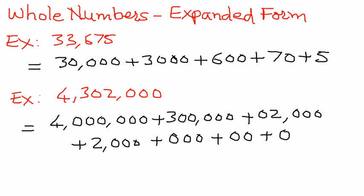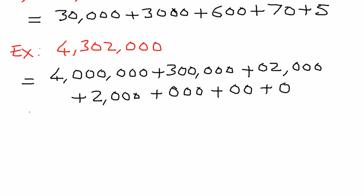When we add up all these numbers, it should add up to 4,302,000. So a number can always be expanded out with respect to its place value, and this is how we represent these numbers.